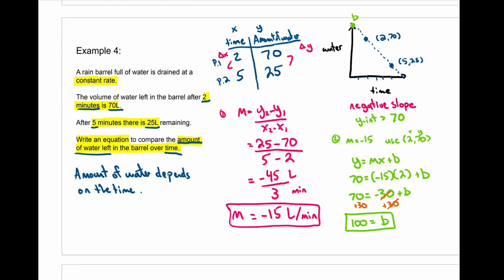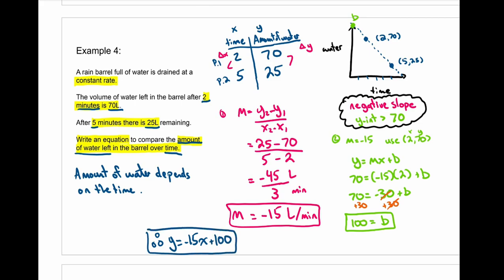So we have our two values now. Going back to our estimations — we should see a negative slope, and we do: m = -15. Our y-intercept should be greater than 70, and it is: b = 100. So our predictions ring true, and our algebra proved that. Therefore, our equation for this scenario is y = -15x + 100. Or written as a scenario: a rain barrel starts at 100 liters and loses 15 liters every minute.